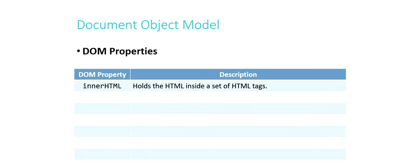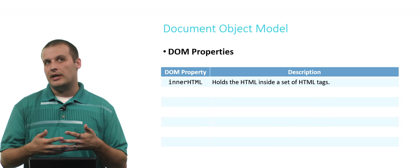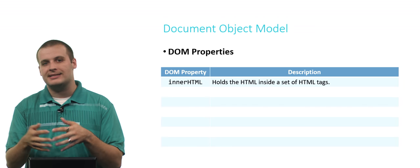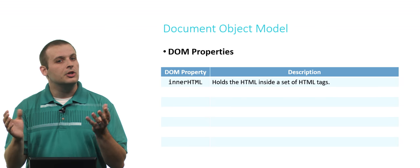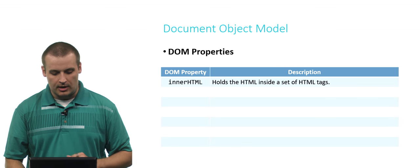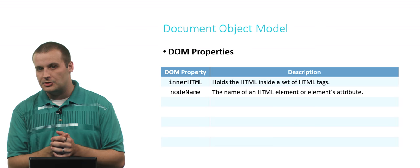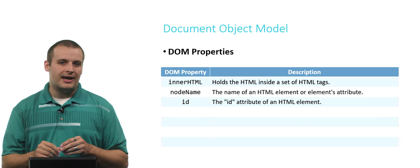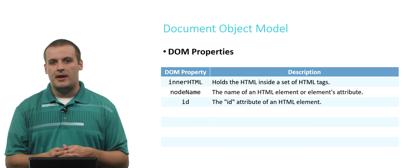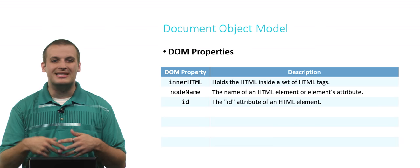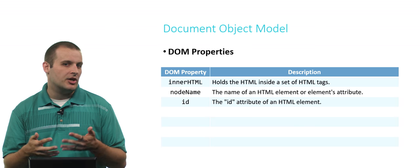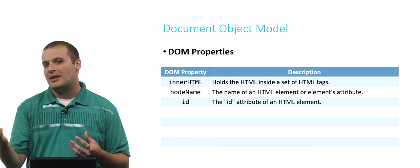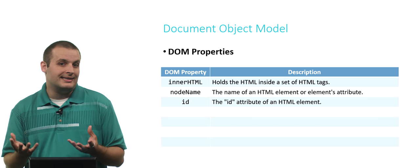One property is innerHTML, which holds the HTML inside of a set of tags. For example, the innerHTML of the title tag would be 'hello world' — whatever the actual title of the page is. Node name would just be 'title' for that node. ID — you may recall from our HTML and CSS video that we can specify an optional ID attribute to certain HTML elements, usually used in CSS to style one particular node. This property lets us figure out what the ID of a particular node is.